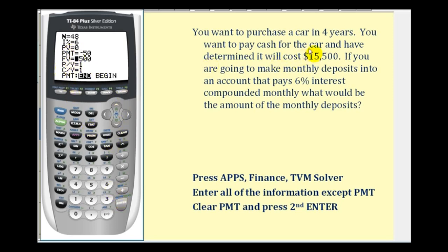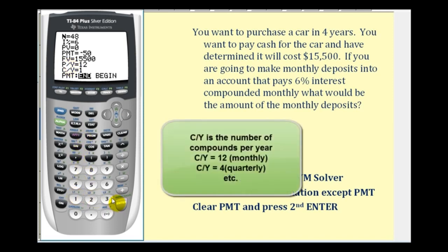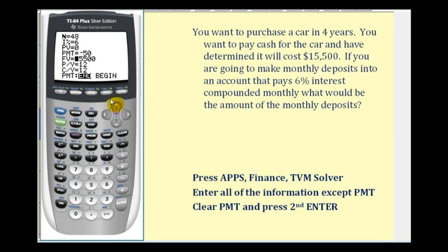The future value we want to be fifteen thousand five hundred dollars. PY stands for payments per year, which will be twelve. And the compounds per year is also compounded monthly. So now we'll go back up to PMT for payment. We're going to clear this amount and then press Alpha Enter, and it will tell us the monthly savings amount that's required: two hundred eighty-six dollars and fifty-two cents.